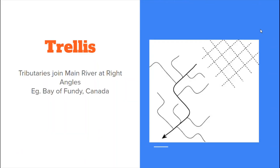The next pattern is the trellis drainage pattern. This is a rectangular pattern, where water is taking turns at right angles. Rock type here is very influential in the trellis pattern. It occurs where there are alternate bands of hard and soft rock, where soft rock is easier to erode, so tributaries will form in the soft rock and join the main river at right angles. An example of this is the Bay of Fundy in Canada, and we can see here what the trellis pattern would look like.